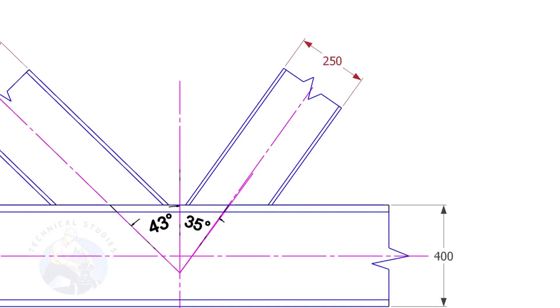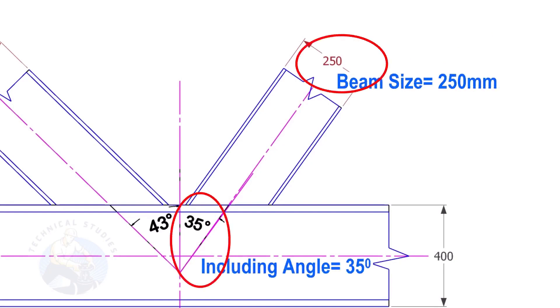Here, the size of the beam is 250 and the including angle is 35. Let us calculate the cutback.